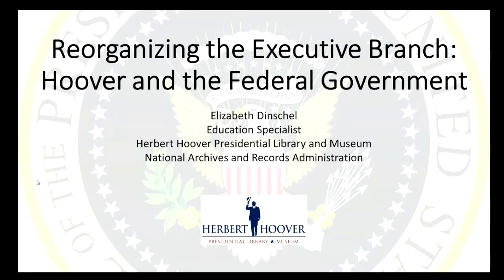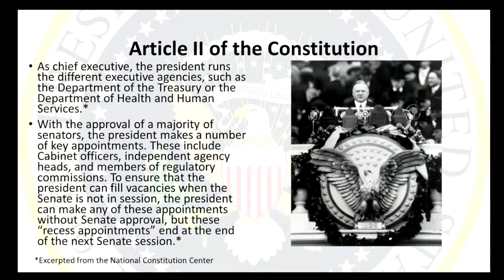When we look at Article 2, it tells us a few things about the presidency: how long the president can be in office, how old you have to be — which is 35 years old — you have to be born in the United States, and you have to live in the United States for at least 14 years. If the president can't serve anymore, the vice president can take over. And the president gets paid a salary, currently $400,000 a year.